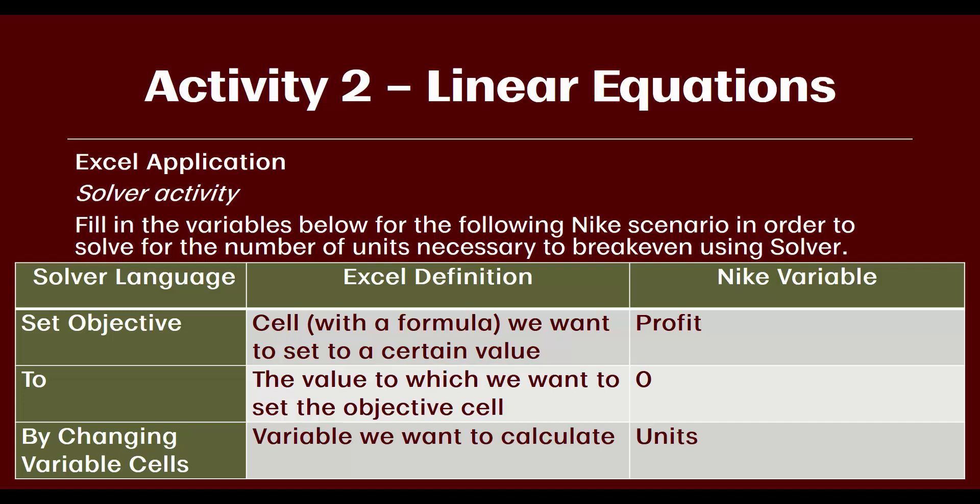So in summary, what this table is telling us is we are trying to tell Excel to set profit equal to zero by changing the number of units. In this explanation, I alluded to a couple of rules we need to remember in Solver. Let's make sure to summarize those.